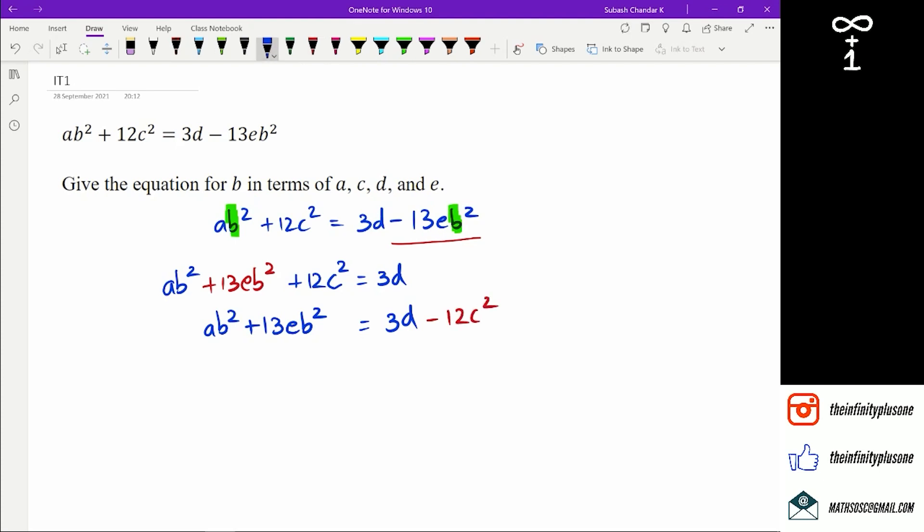So at this point, I can see that b² is a common factor for both of these terms. So I can take it out. When I simplify it, I'm going to take b² as a common factor. I'm going to get a plus 13e equals 3d minus 12c².